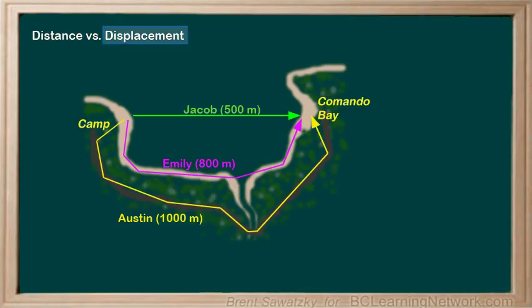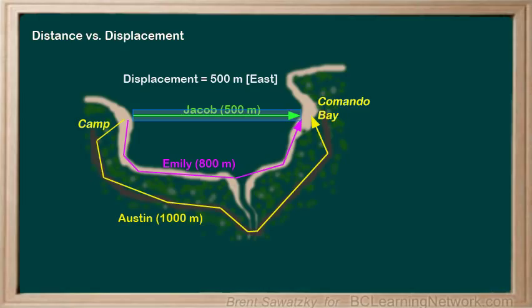Displacement, on the other hand, has us just looking at the most direct route from the start to the end. For all three of them, the displacement would be exactly the same — 500 meters east. The vector arrow representing their displacement is this. Jacob is the only one whose distance matches the magnitude of his displacement, because he went directly to the bay. For displacement, we show both magnitude and direction, as displacement is a vector quantity.